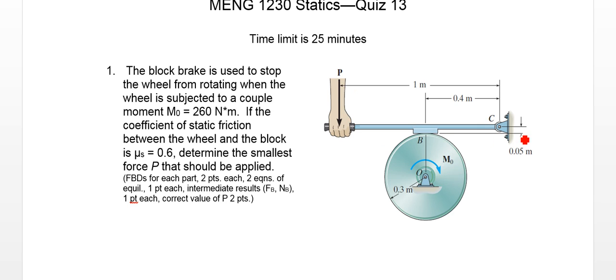There is a small moment arm in that direction between the friction and the pivot point of our brake. And there is also a moment arm between our force and that pivot point, as well as between the normal force and that pivot point.